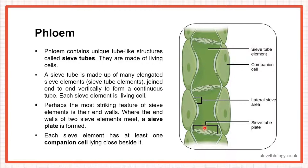One sieve tube is made up of many elongated cells — each is called a sieve tube element. Each sieve tube is made up of many sieve tube elements connected to each other vertically, making a continuous vertical column. Each sieve tube element is not a dead cell, unlike xylem. In xylem there was no end plate stopping the flow of water and minerals, so we had continuous mass flow.